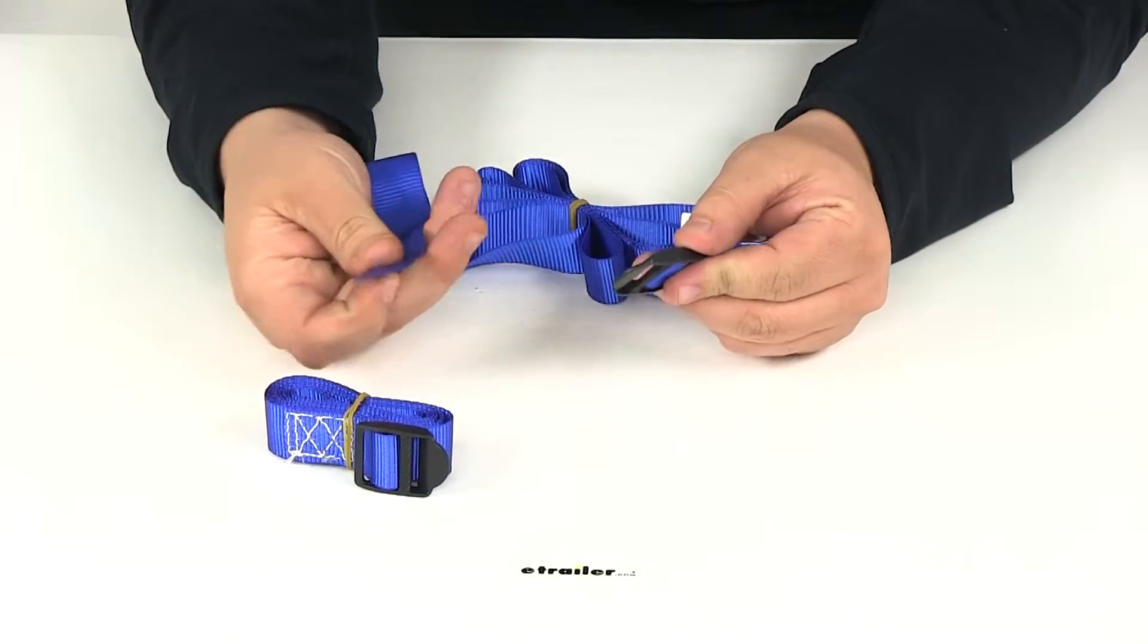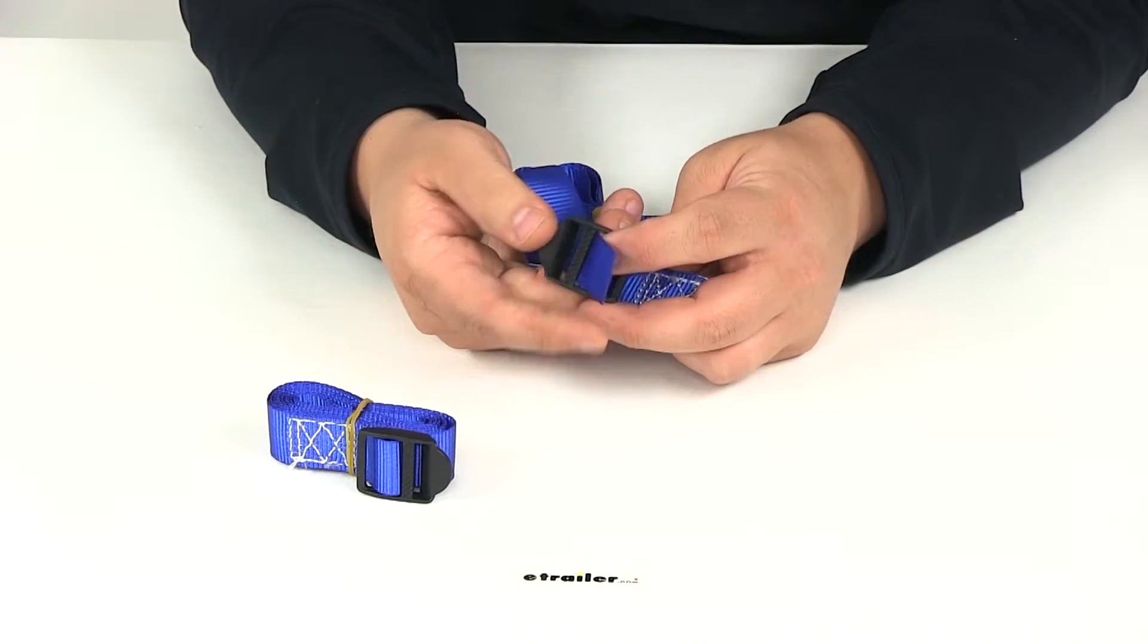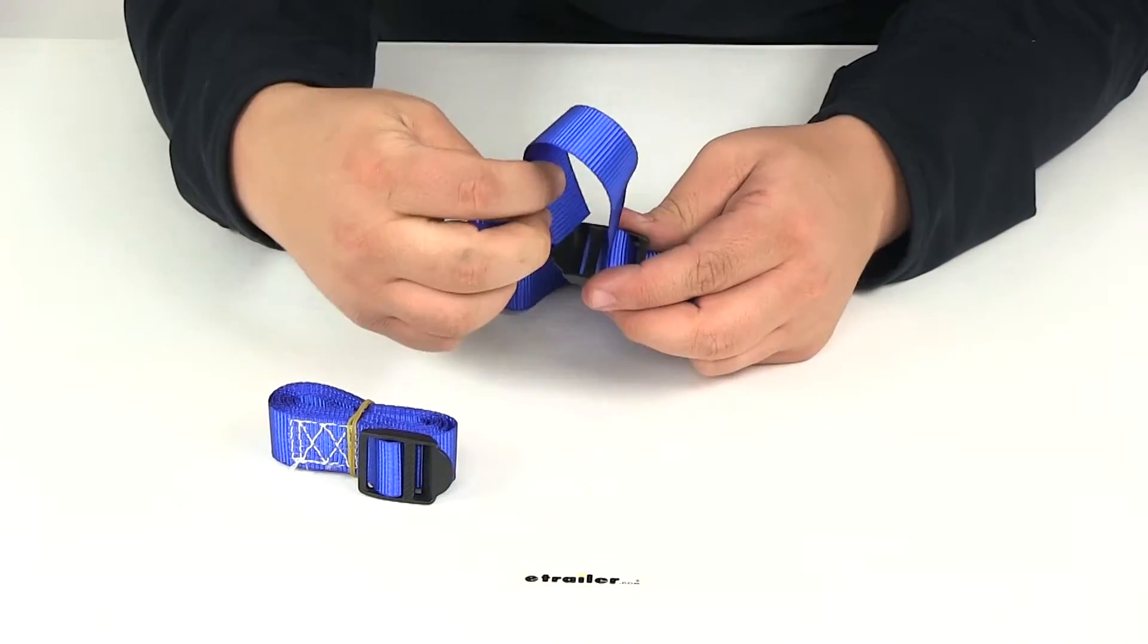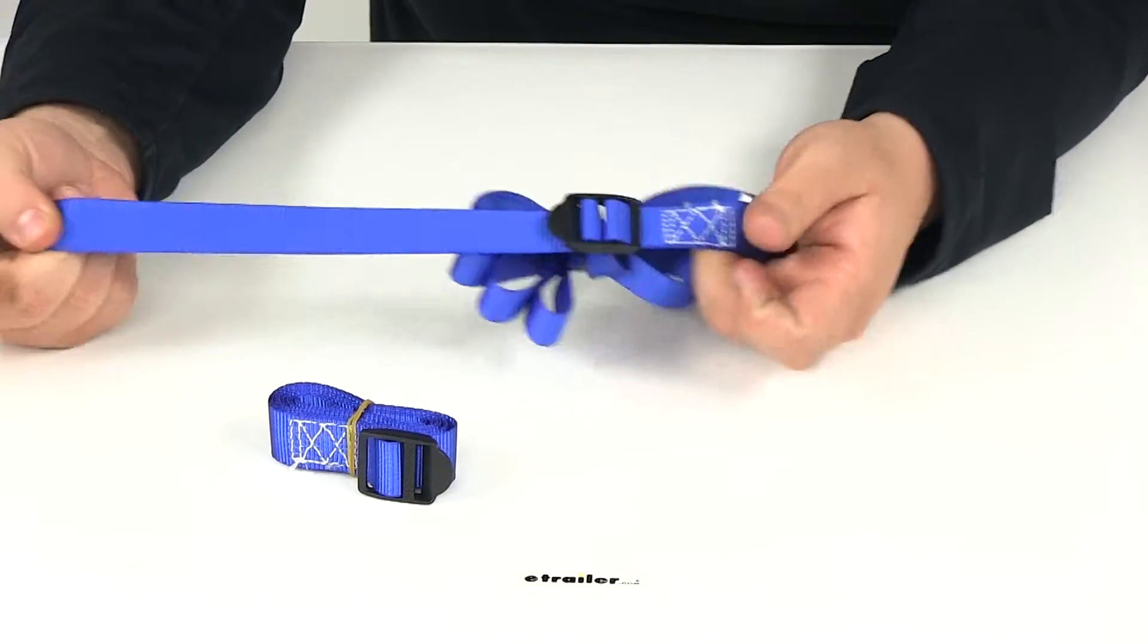Really simple operation, you place it around whatever it is that you're wanting to hold down. Place the plain end of the strap through the cinch strap, you're going to bring it up, make a U-turn, go back down through the other slot, and then pull it tight over your application.